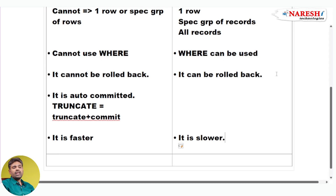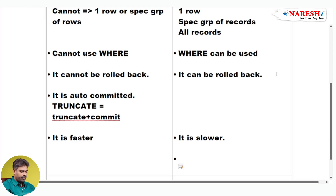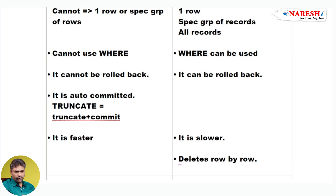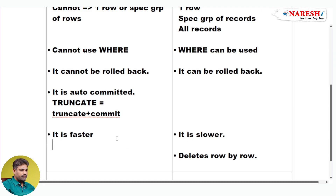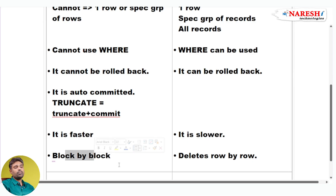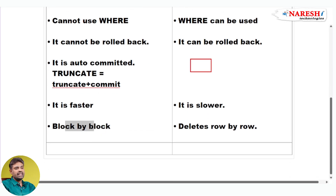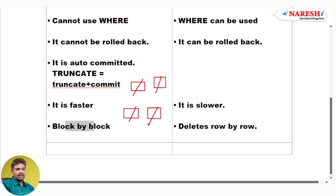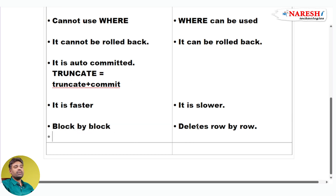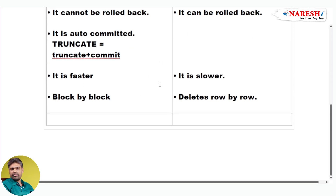Why? Because DELETE deletes row by row — first it deletes the first row, then the next row, and so on. But TRUNCATE deletes block by block, or page by page. Oracle data is stored in blocks; TRUNCATE clears the first block, then the next block, then the next — and inside each block, records are stored. TRUNCATE deletes block by block, whereas DELETE deletes row by row. That is why TRUNCATE is faster and DELETE is slower. These are the major differences between TRUNCATE and DELETE.